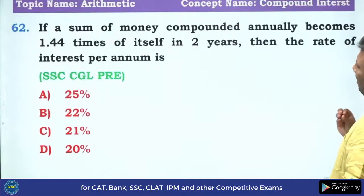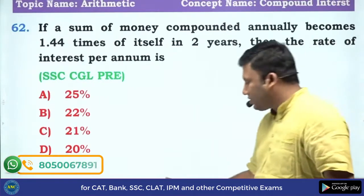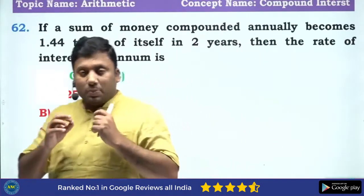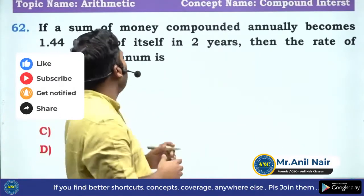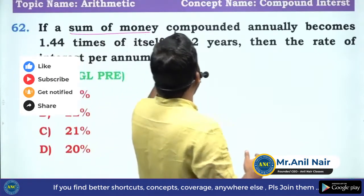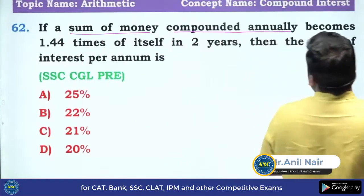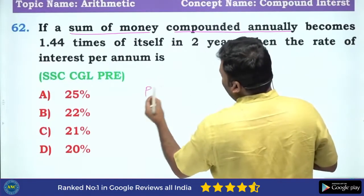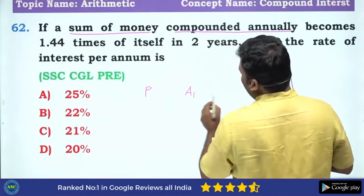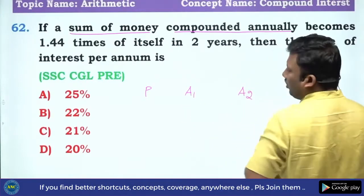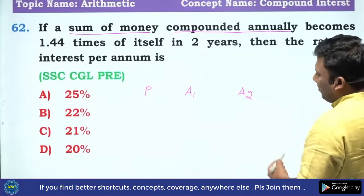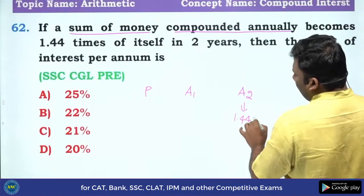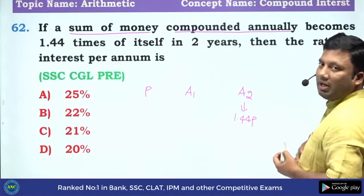Question — first, read the question. In mathematics or in any subject, the first thing is to spend some time and read the question. If a sum of money compounded annually becomes 1.44 times of itself in two years, there is P, this is the amount after the first year, and this is the amount after the second year. It became 1.44 times the principal.